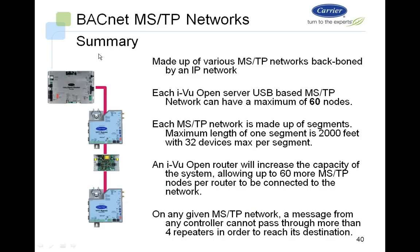In summary: the system is made up of various MSTP networks backhauled by an IP network. Each iView Open server-based MSTP network can have a maximum of 60 nodes. Each MSTP network is made up of segments with a maximum length of 2,000 feet and 32 devices maximum per segment. An iView Open router will increase the capacity of the system, allowing an additional 60 nodes per router. On any given MSTP network, a message from any one controller cannot pass through more than four repeaters to reach the destination.